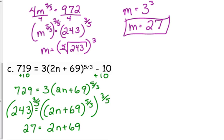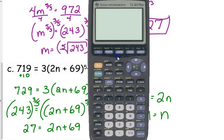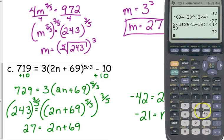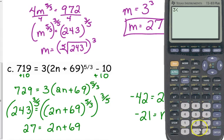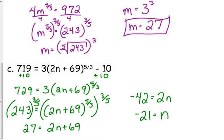719 equals 3 times 2n plus 69 to the 5/3 minus 10. Add 10, divide by 3, raise to the 3 over 5. That is negative 42, so negative 21 equals n. I am always wary when I get negative answers on these, so I'm going to plug this one in to check just to make sure. It's still a positive number inside those parentheses, so we're good. Negative 21 is the answer.